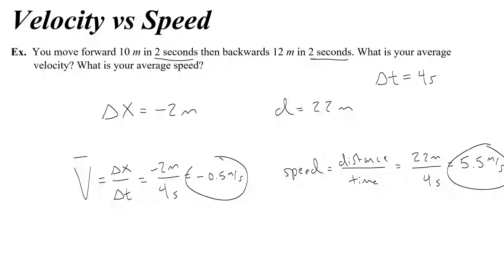So here, the speed is different from the average velocity, because speed deals with the amount of distance, the total distance that you've traveled in an amount of time, whereas your average velocity is only interested in the change of your position over a certain amount of time.